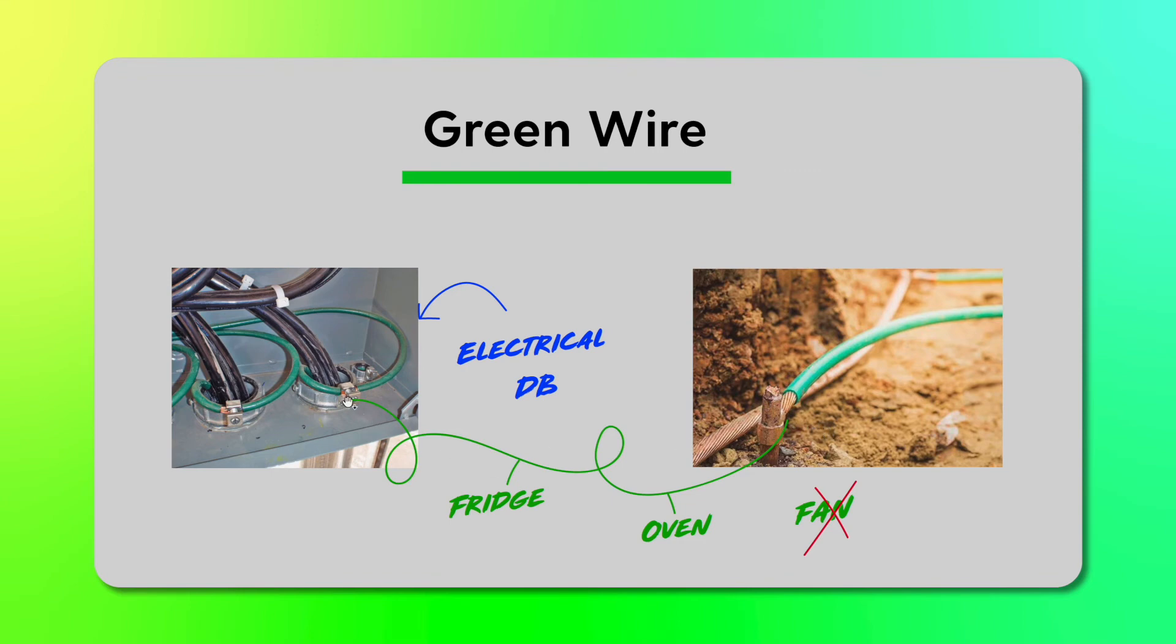This will be the smallest resistance path for the electric current to pass. For example, if it is connected with the ground, and in case you touch the DB or your fridge is shortened and you touch the fridge or oven, the current won't take a path from your body to the earth. Rather, it will take this green line path and will go directly to the earth because this is the least resistance path.